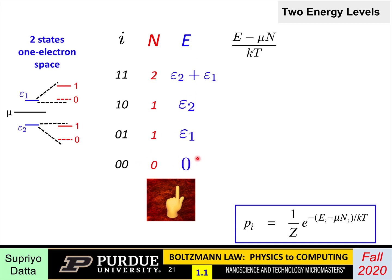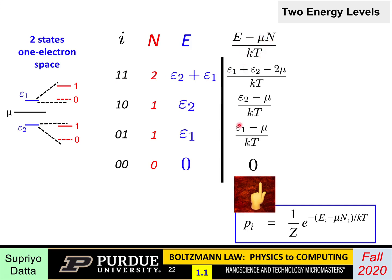For the energies: state 00 has energy zero; state 01 has energy epsilon_1; state 10 has energy epsilon_2; state 11 has energy epsilon_1 plus epsilon_2. Filling out (E minus mu N) over kT: for 00 it's zero; for 01 it's (epsilon_1 minus mu) over kT; for 10 it's (epsilon_2 minus mu) over kT; and for 11, since energy is epsilon_1 plus epsilon_2 and N equals two, we subtract two mu, giving (epsilon_1 plus epsilon_2 minus 2 mu) over kT.